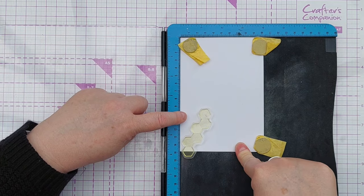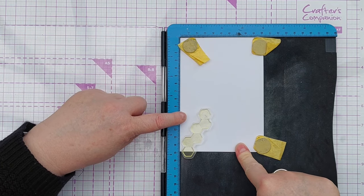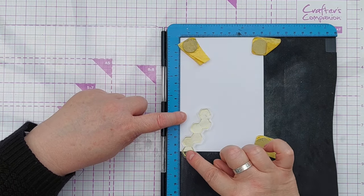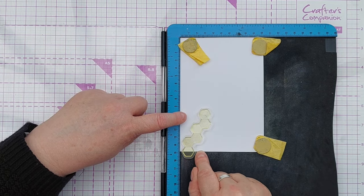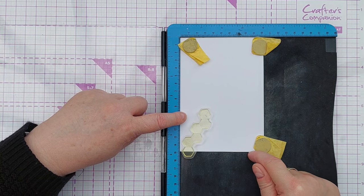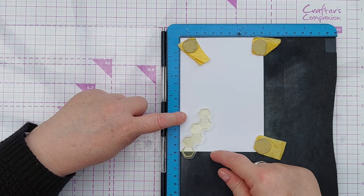This is a piece of smooth white cardstock about four by six inches and I've popped my hexagon stamp on here with the two points of the hexagon in line with the edge of the paper.